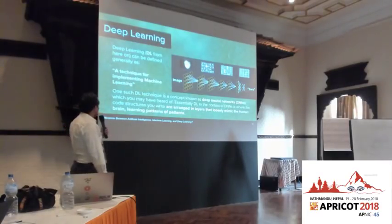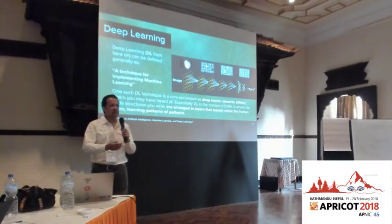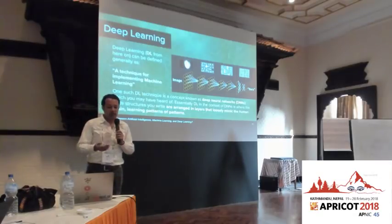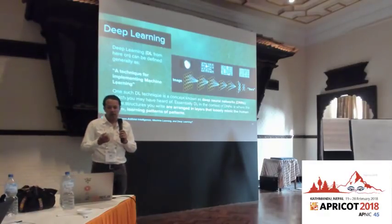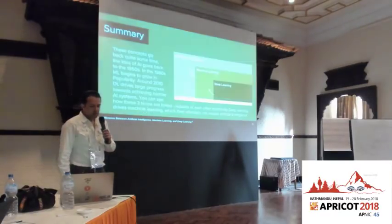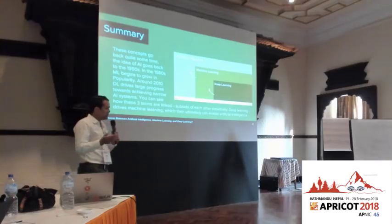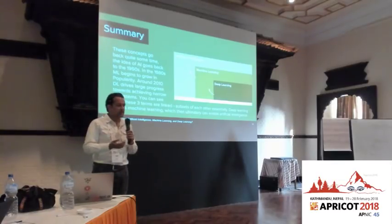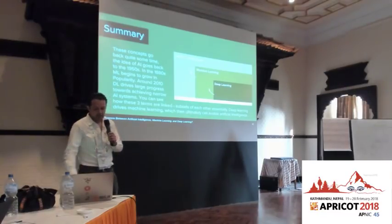What about deep learning? Essentially, deep learning is a technique for implementing machine learning — one level deeper, the actual algorithm itself. You may have heard of deep neural networks. Deep neural nets are very loosely modeled on how we believe the human brain works, essentially learning patterns of patterns using their deep structures. These three terms — AI, ML, and deep learning — are interlinked and build upon each other, going back to the 1950s. It's only now that we have the processing power and memory to use them in real-world situations.